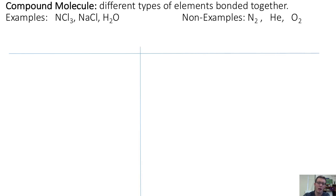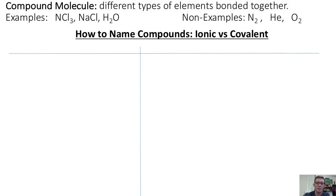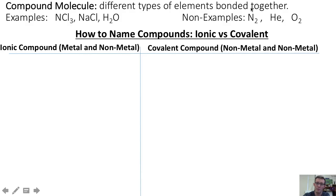Hi chem team. We've defined compound molecules as different types of elements bonded together. The way chemists name compound molecules depends on whether the compound is an ionic compound made from a metal and a nonmetal, or a covalent compound made from more than one nonmetal.